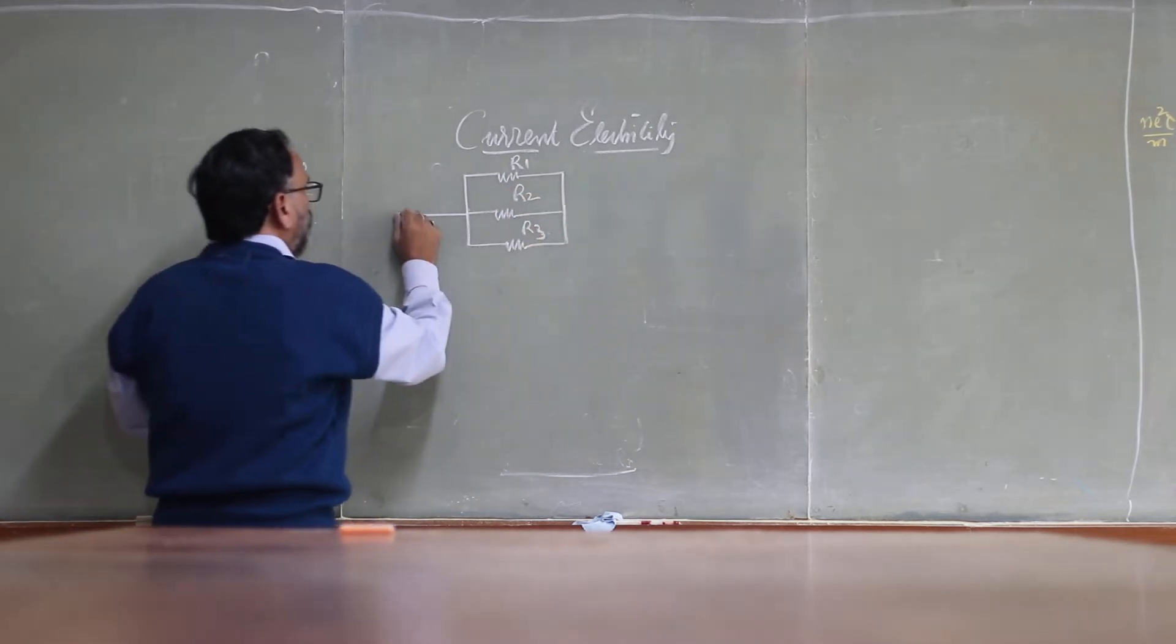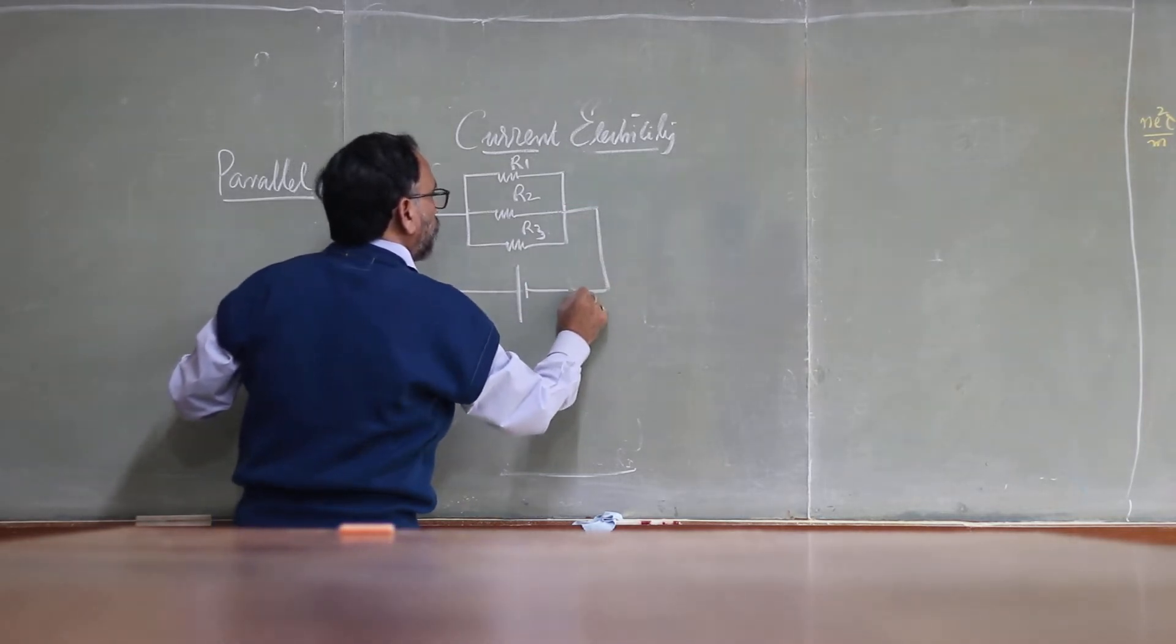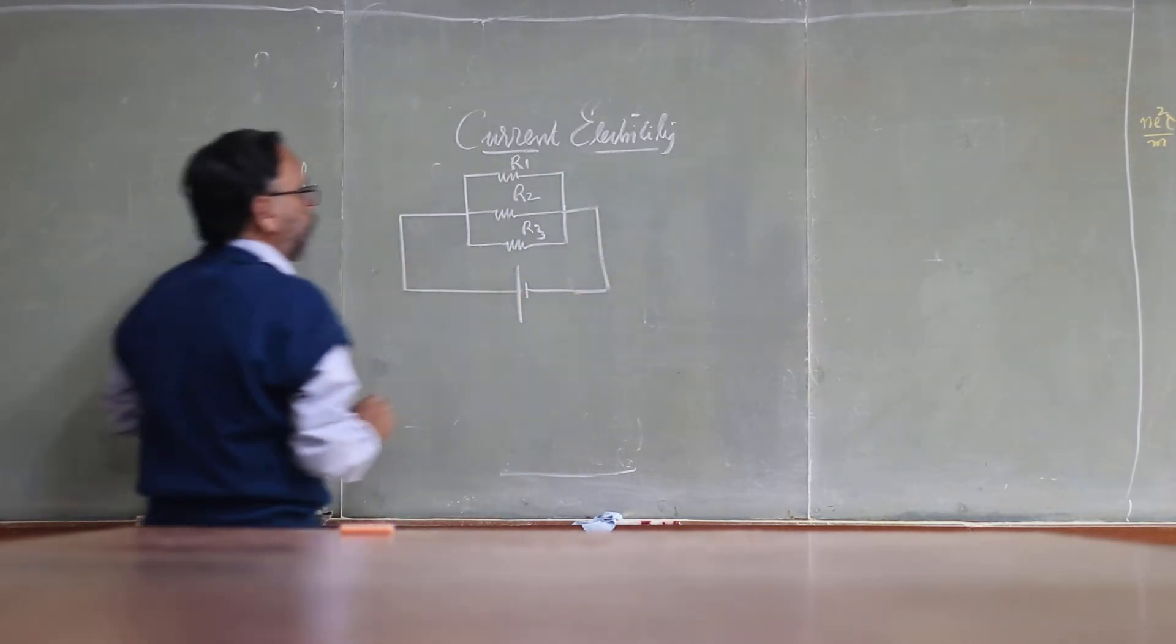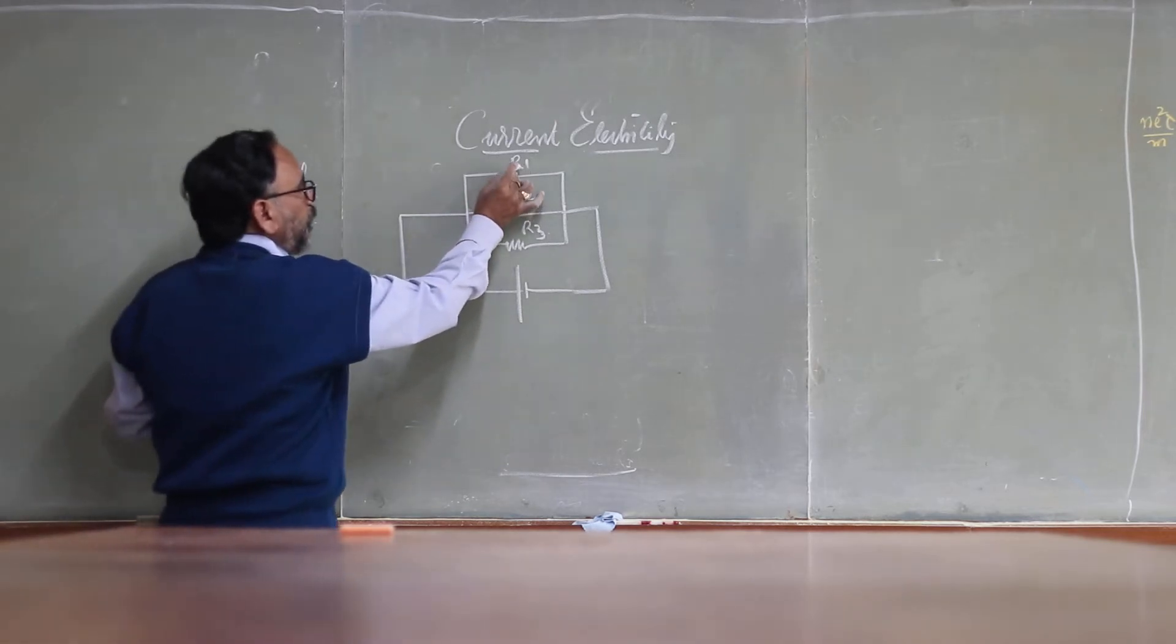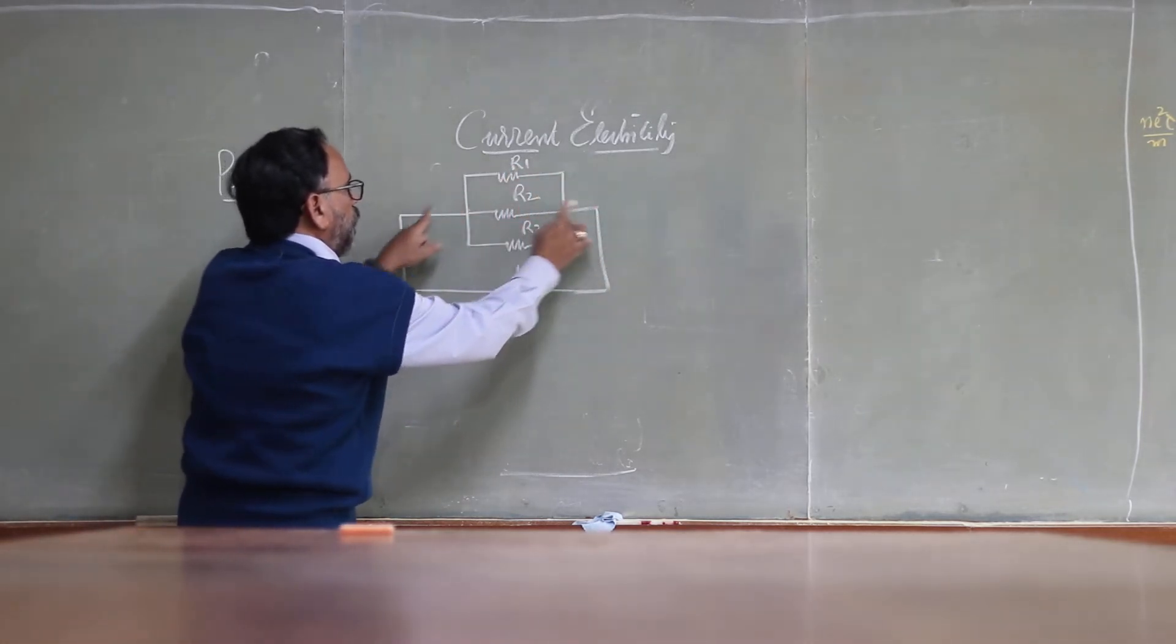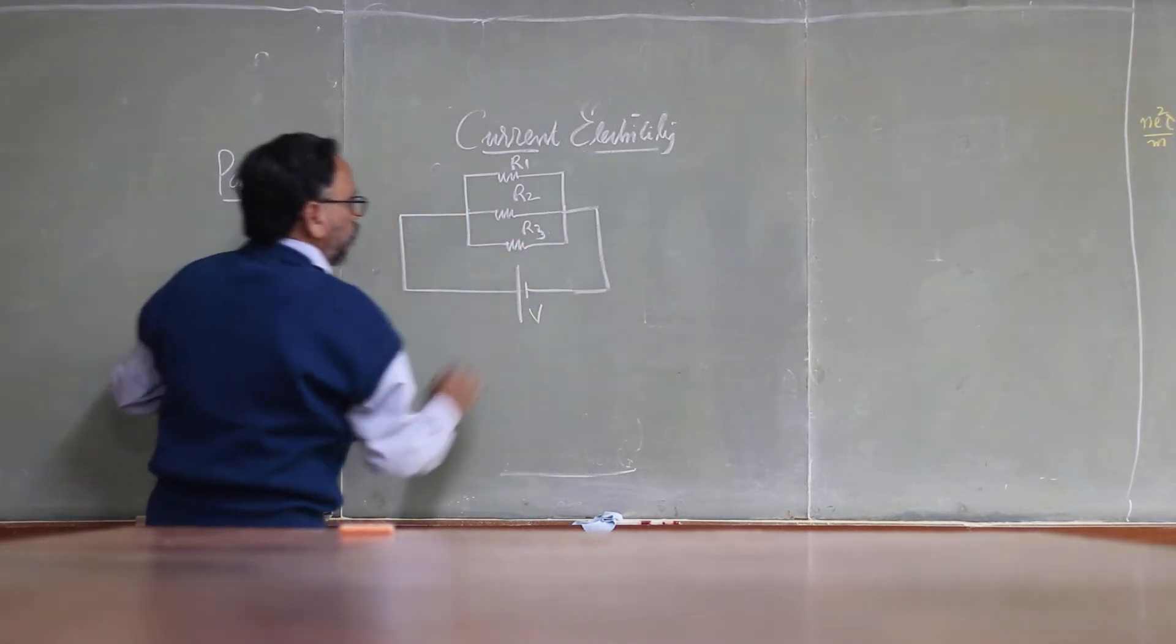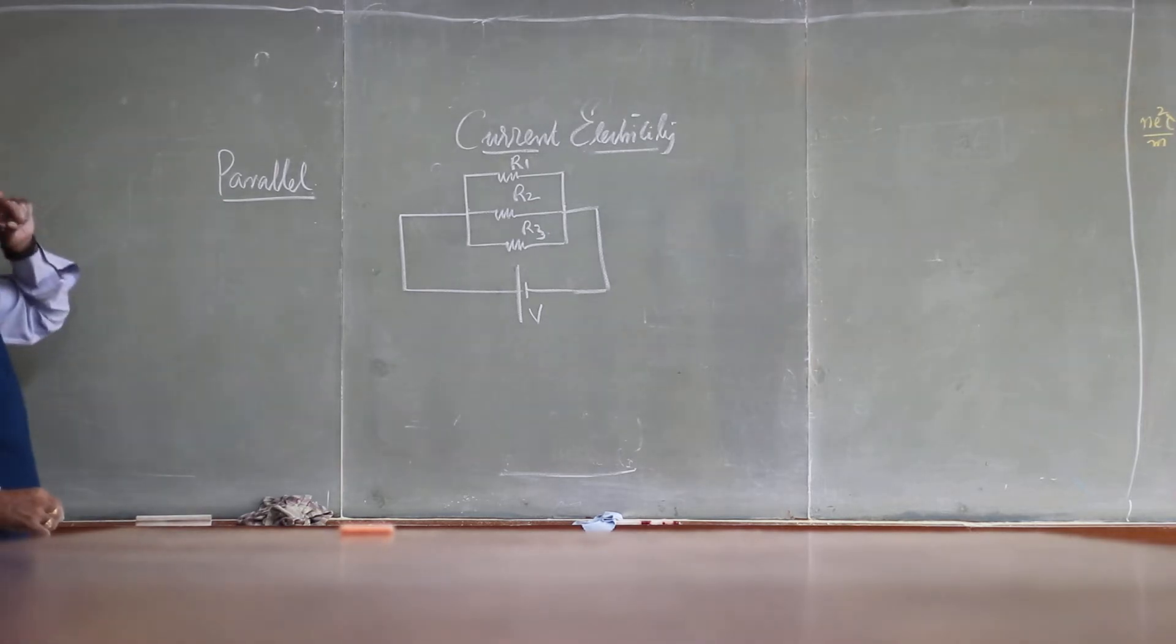Resistors are connected in parallel if the two ends of the resistors are connected across the same potential source. If you look at R1, the two ends are connected across the same source, R2 also the same source, and R3 also across the same source. Then this combination is called parallel mode of the resistors.